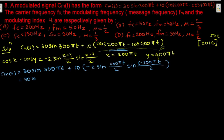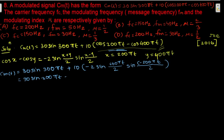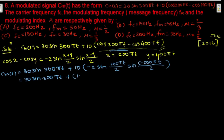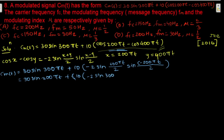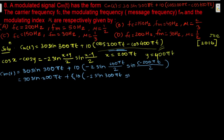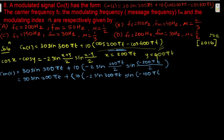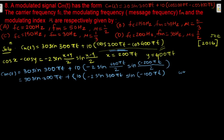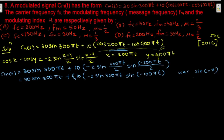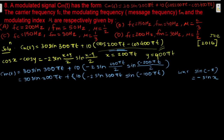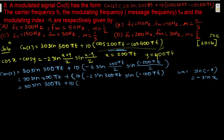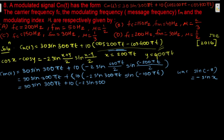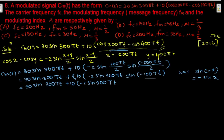So we have: 30 sin(300πt) + 10 × [−2 sin(300πt) · sin(−100πt)]. Since sin(−x) = −sin(x), sin(−100πt) becomes −sin(100πt). So this becomes 30 sin(300πt) + 10 × [−2 sin(300πt) × (−sin(100πt))].